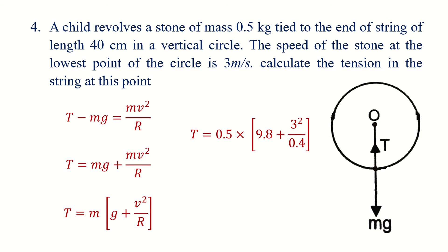Simply substitute the values: 0.5 kilogram, 9.8 gravity, 3 meters per second velocity, and 40 centimeters converted to 0.4 meters. So T equals 16.15 Newtons. The tension on the string is 16.15 Newtons.